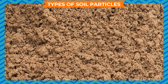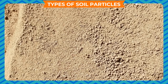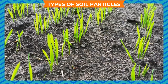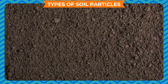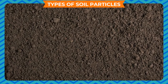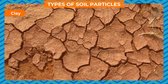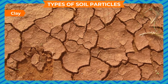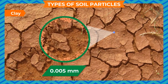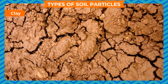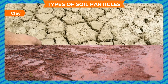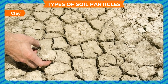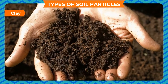Types of soil particles: Soil contains particles of different sizes and shapes. Broadly speaking, there are four types. Clay particles are the smallest, soft and smooth, around 0.005 mm in size. They have very little air space between them, commendable water retention capacity, and also contain a good quantity of humus.